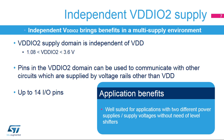The independent VDD-IO2 supply domain allows operation in an environment with several different logic supply voltages. It allows the STM32 to communicate with logic supplied from 1.08 volts, much lower than the VDD supply of the STM32, which can range up to 3.6 volts. Up to 14 I/O pins in this domain can be used to communicate with other logic circuits supplied by voltage rails other than VDD. Independent voltage supplies may allow for the omission of external voltage shifters in the design.